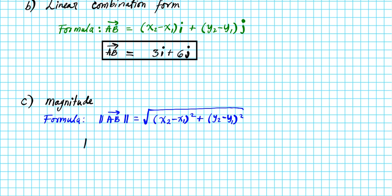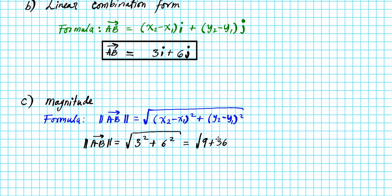Applying the formula, the magnitude of vector AB is the square root of (x2 minus x1) squared plus (y2 minus y1) squared. We already know x2 minus x1 is 3 and y2 minus y1 is 6. So we have the square root of 3 squared plus 6 squared, which is the square root of 9 plus 36, the square root of 45, which simplifies to 3 radical 5.